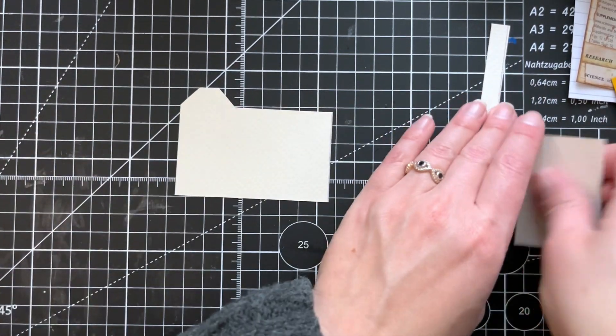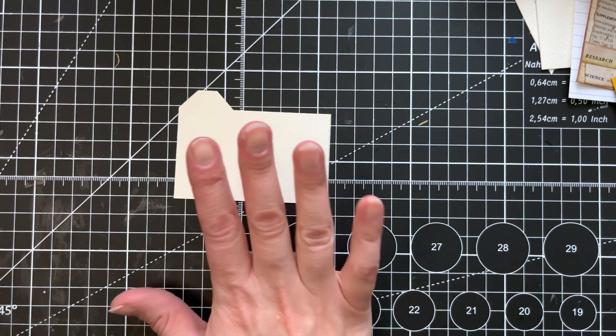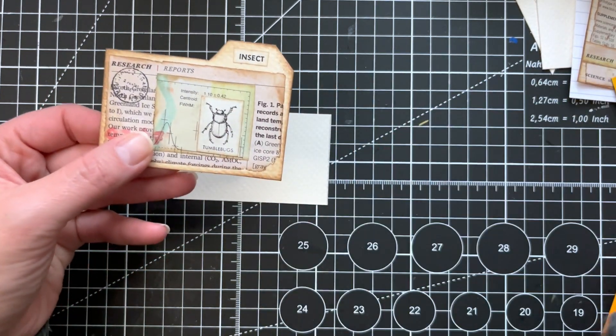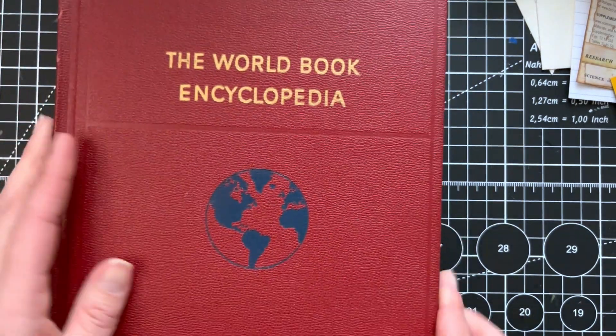So this is going to be your base. You can do whatever shape you want, but this is the shape that I chose. And for my specimens, we're going to use book pages.